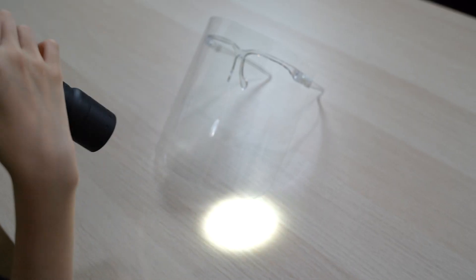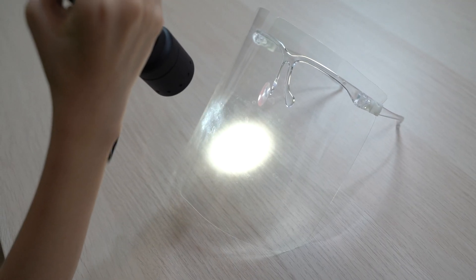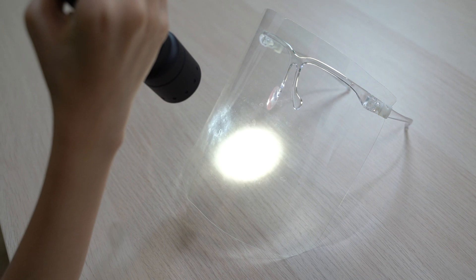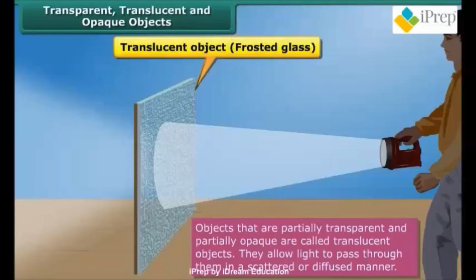Now we use a plastic face shield to do an experiment about transparent objects. When we point the torch light to the plastic face shield, most of the light can pass through and it hardly casts any shadows.